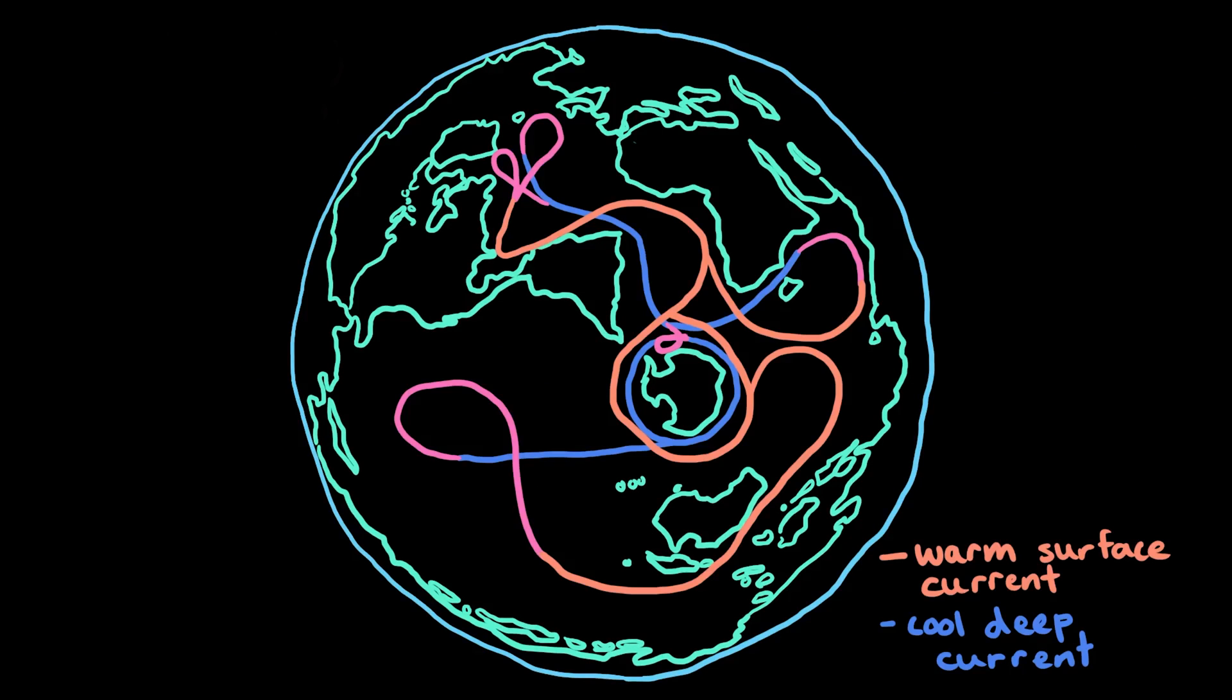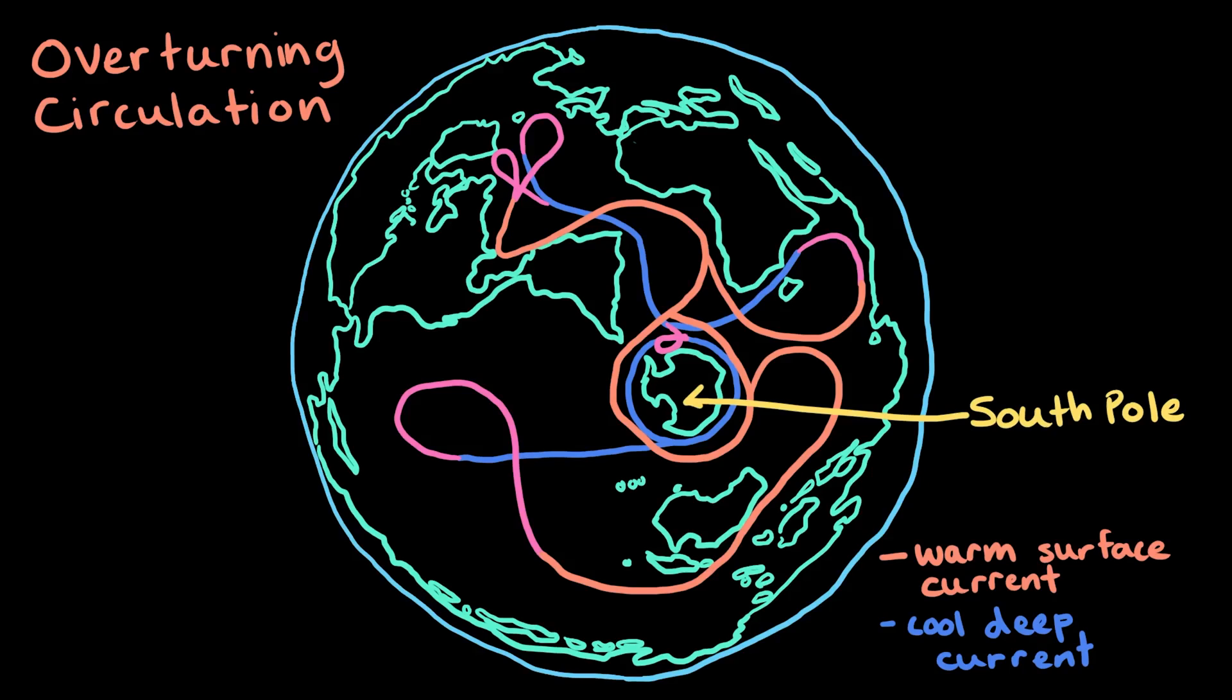Collectively, this system of currents is known as the overturning circulation. You might also hear it called the global ocean conveyor belt. So here's a map showing the overturning circulation. This map might look a little bit strange, but here we're looking at Earth from the South Pole.